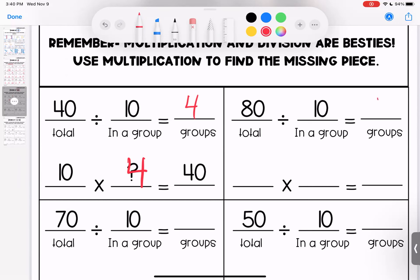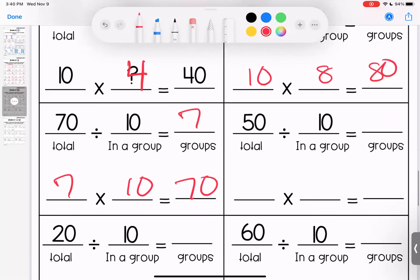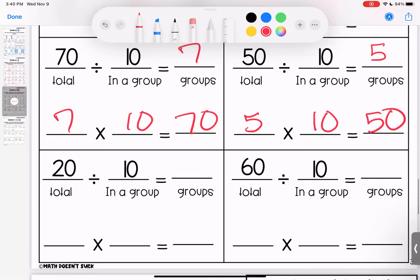Eighty divided by ten is eight because ten times eight is eighty. Seventy divided by ten is seven because seven times ten is seventy. Fifty divided by ten is five because five times ten is fifty. Twenty divided by ten is two because two times ten is twenty.